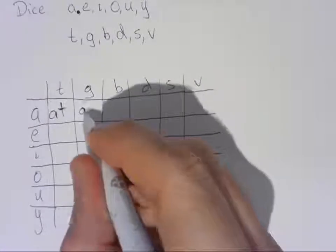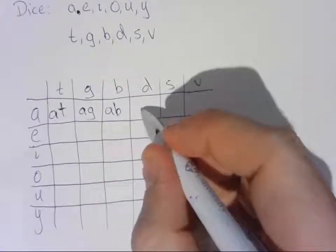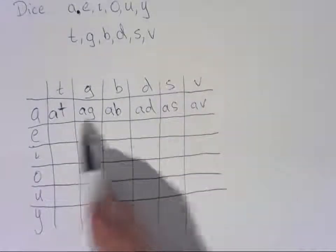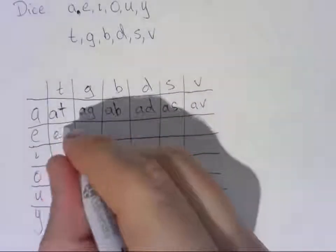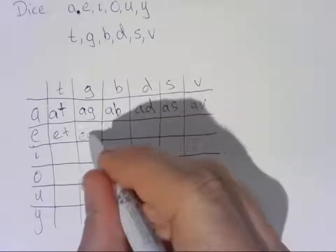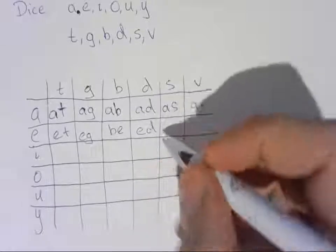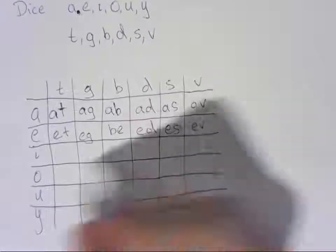Now we can do that all the way across for all of the other possibilities as well. So A, G, A and B, A and D, A and S, and A and V. It doesn't really matter what order we put these. It, of course, given the question I'm asking, the probability of getting a real word, it's probably a good idea to try to write it in the correct order to be an actual word, if it's possible. So E and T, E and G, B, E, I'll write it that way because that is a word, E, D, I won't use names, so I won't count Ed as a word, E, S, E, V.